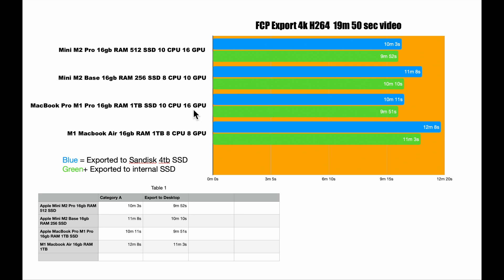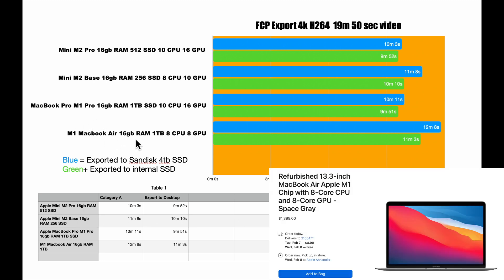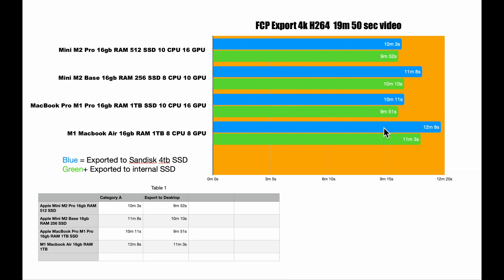The last one is my oldest — the M1 MacBook Air, a 2020 model I bought when it first came out: 16GB of RAM, 1TB SSD, 8-core CPU and 8-core GPU. That shows it's a little slower — about two minutes slower than the Pro on top, and about a minute slower on the internal export.